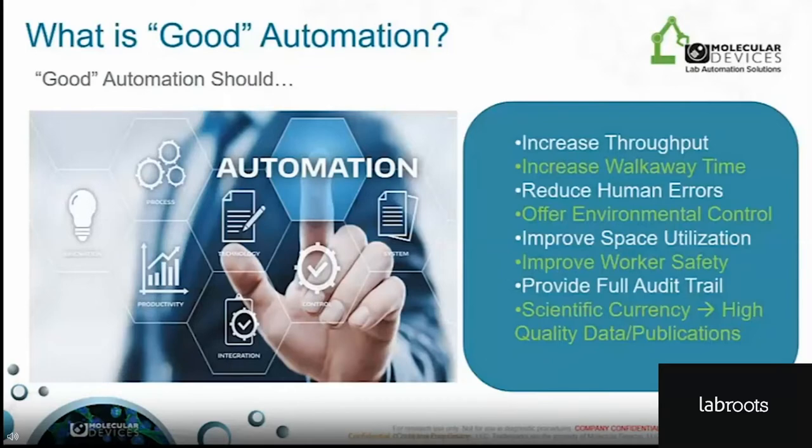When asking the question 'what is good automation?', some factors to consider include desired throughput, space utilization, the need for environmental control, and the level of human intervention needed. In general, good automation should increase throughput, increase walkaway time, reduce human error, offer environmental control, improve space utilization, improve worker safety, provide a full audit trail, and produce high quality data.